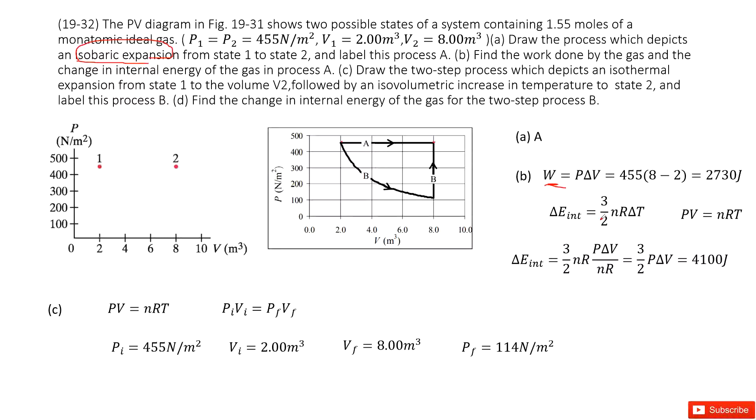Now, next one, we need to find the internal energy change. So internal energy change, as we learned, we can find it in this function. So in this function, you can say nR3T. How can you find the dirty temperature changes? We don't know. We only know how the P and V changes, right?